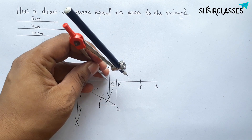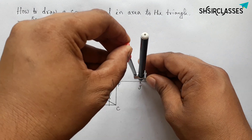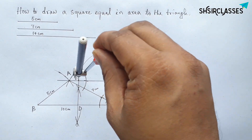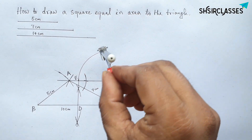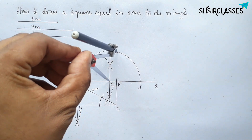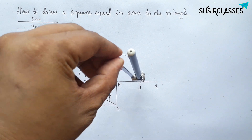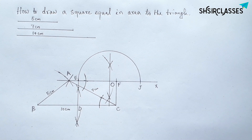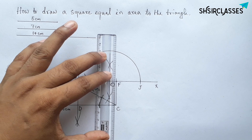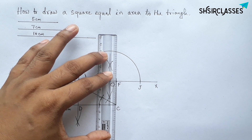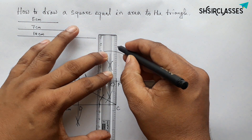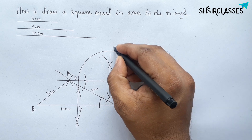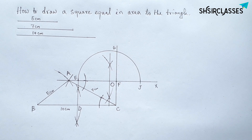Taking O as the center with radius OJ equal to OE, draw a semicircle from E to J. This is a perfect semicircle. Extend line CF to meet the semicircle, marking that intersection point as G.